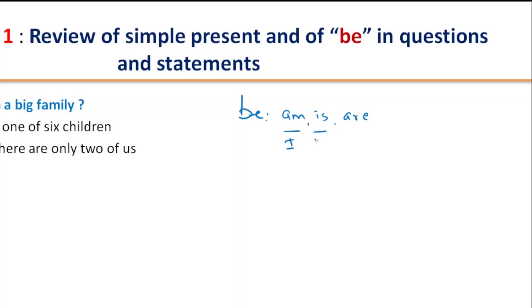we use IS with singular like HE, SHE and IT. And ARE, we use plural like YOU, WE and THEY.